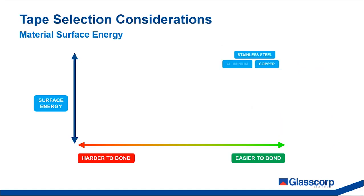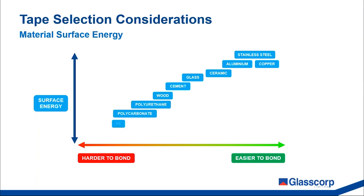The relative surface energy for many common materials is already well known. Metals typically exhibit high surface energies and are more often easier to adhere to. In the middle range we have common building substrates like timber, concrete, and glass. On the other end of the scale, certain engineered plastic materials are known to have low surface energy and can be notoriously difficult to adhere to — examples include Teflon, polypropylene, and polyethylene.